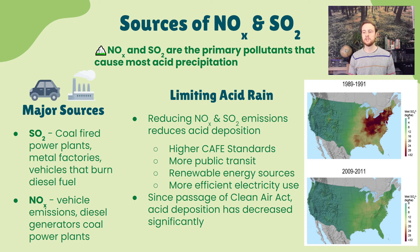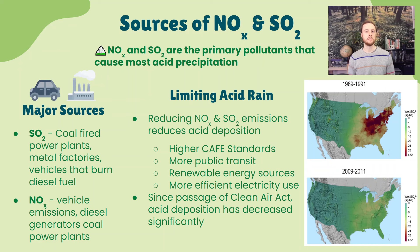Acid deposition is worse in the eastern United States for a couple of reasons. Winds drive from west to east in the Americas, pushing acid deposition formed in the rust belt areas of the Midwest — where there are metal-producing facilities, coal-fired power plants, and heavy vehicle emissions from big cities — eastward toward the eastern U.S. But due to the Clean Air Act and reductions in NOx and SO2 through laws, regulations, and technology, there has been a dramatic decline in acid deposition formation.